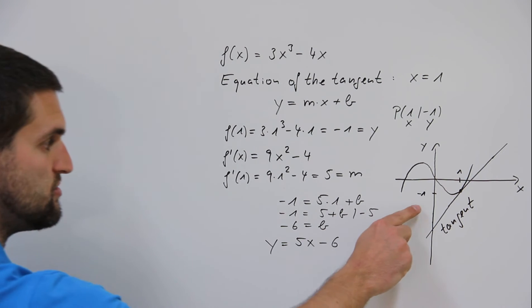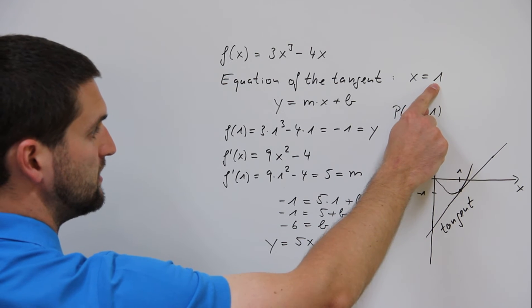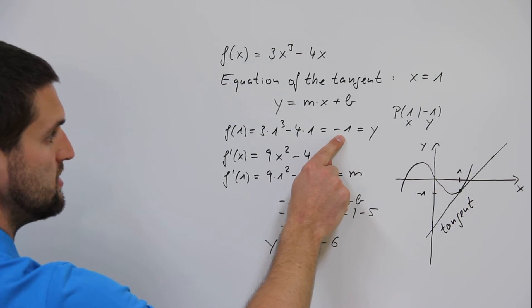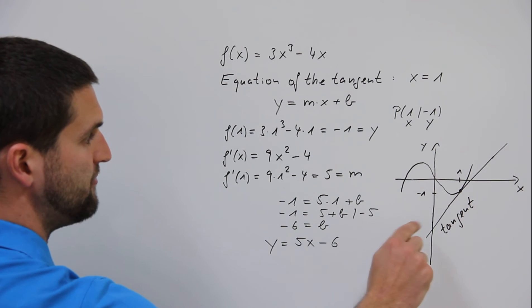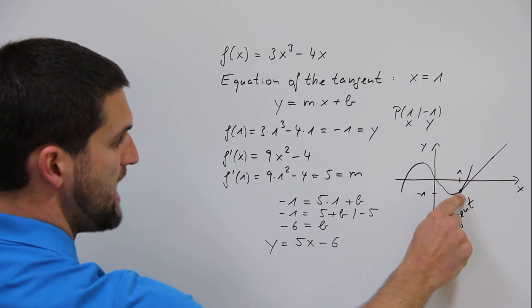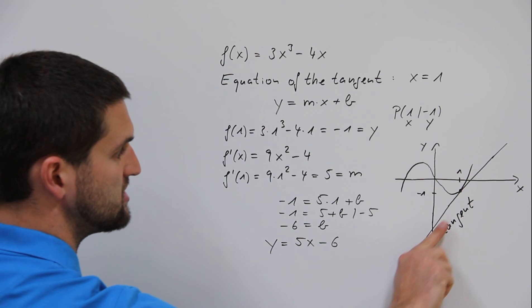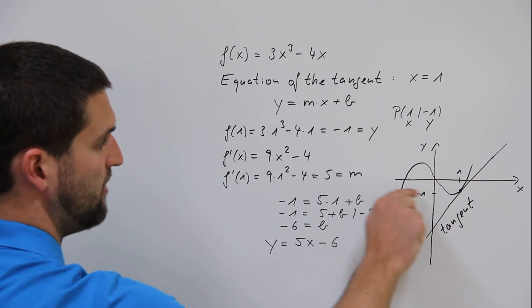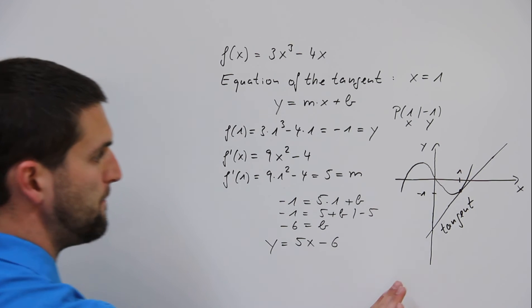Look at the diagram. We have x equals 1, y equals minus 1. The point (1, -1) on the graph of f(x). The slope is 5, positive.